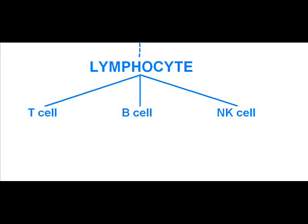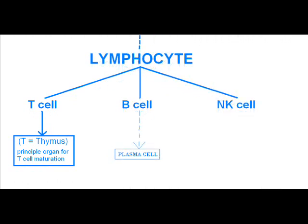Today we'll be talking about T lymphocyte, the T cell. I've given you a picture showing that lymphocyte divides into three kinds: T cell, which is T lymphocyte; B cell, which is B lymphocyte; and NK cell, which is natural killer cell. Today we'll be talking about the T cell, which is the T lymphocyte. The T cell is equal to the thymus — T means thymus.